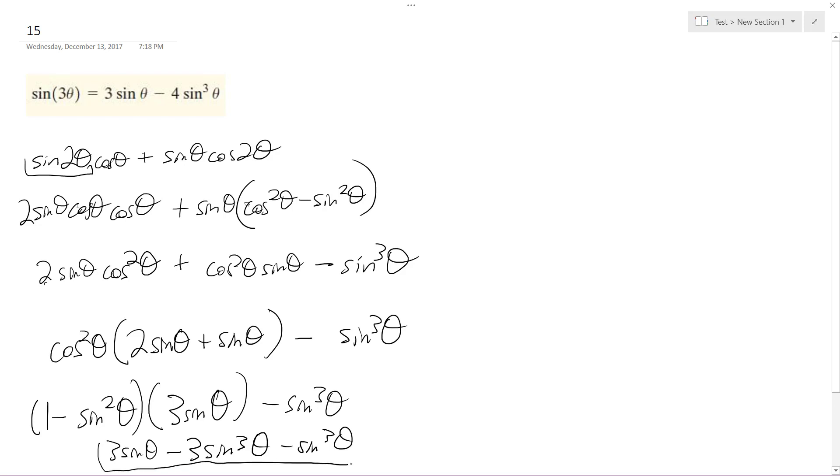Hey, that works out, that's exactly what we need. The only thing you've got to combine are these two now, and your final solution ends up being 3 sine theta minus 4 sine cubed theta. That's it. Hopefully that helps.